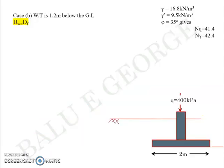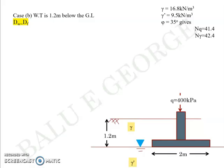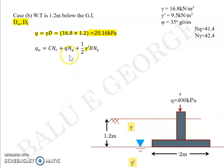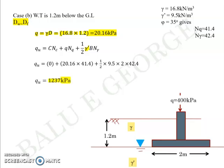Case B: water table is 1.2 meters below ground level, which means it is at the foundation level (dw = df). Soil above the foundation has bulk unit weight γ; below has submerged unit weight γ'. So the second term uses γ, giving q = 20.16 kPa (same as before), and the third term uses γ' = 9.5. Substituting: qu = 1237 kPa, and factor of safety = 1237 / 400 = 3.09.